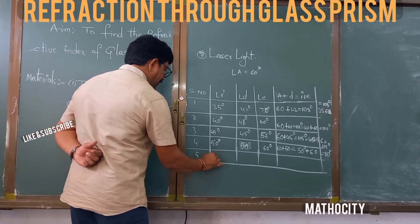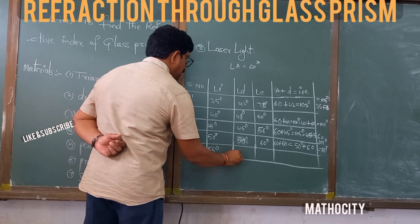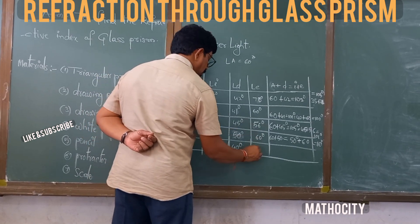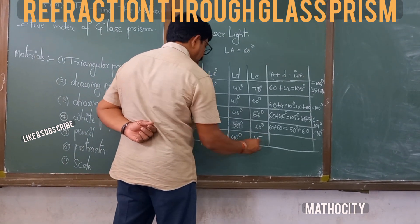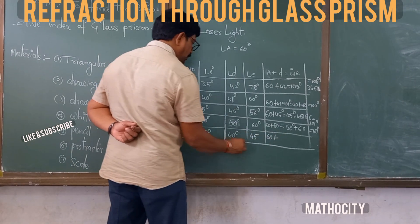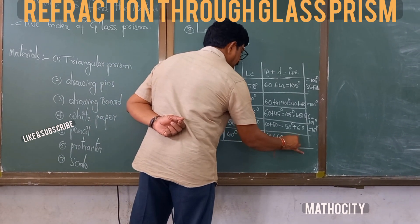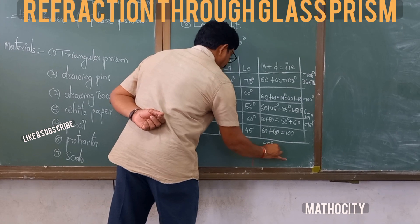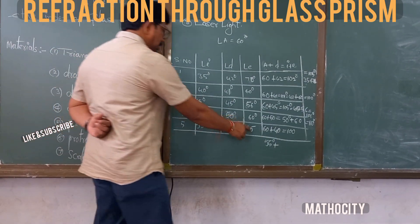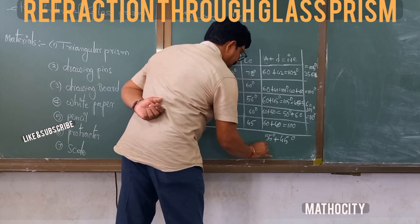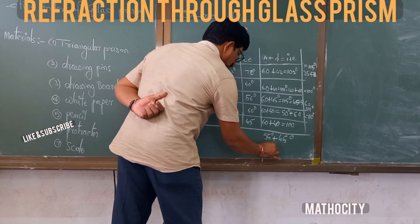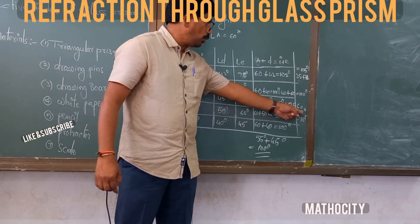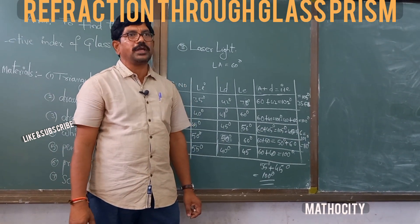For the reading at 55 degrees, deviation is 40 degrees and emergent is 45 degrees: 60 plus 40 is 100 degrees, and I plus E = 55 plus 45 = 100 degrees. In two readings, due to parallax error and some other errors, there is a difference of one or two degrees, which is negligible.